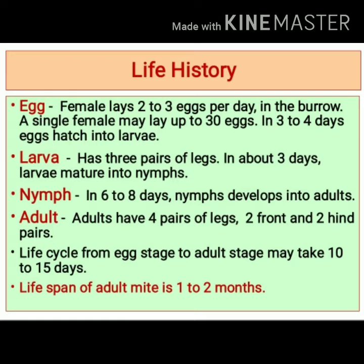Within three to four days, these eggs hatch into the next stage, that is larvae. Larvae have three pairs of legs, and in about three days larvae mature into nymphs. The nymphal stage lasts for six to eight days, after which it develops into an adult mite.